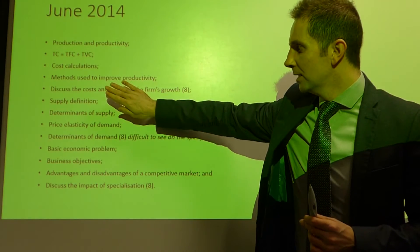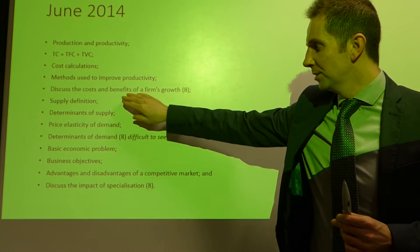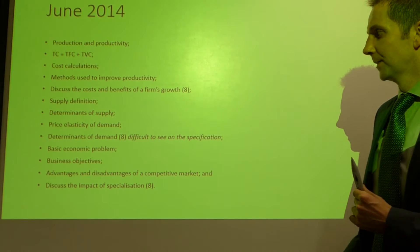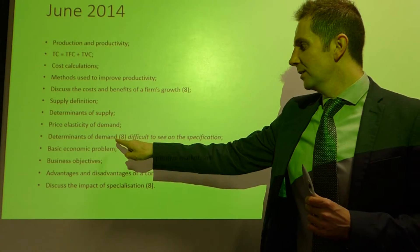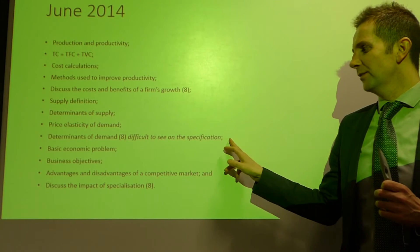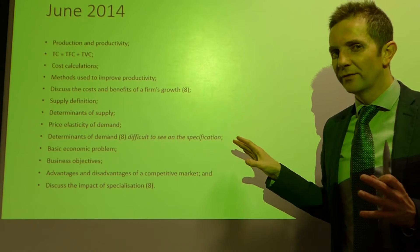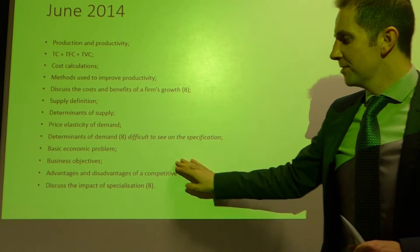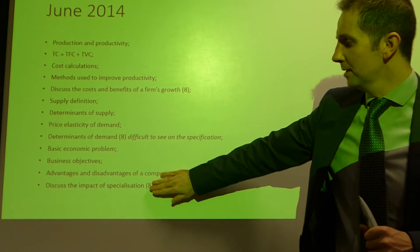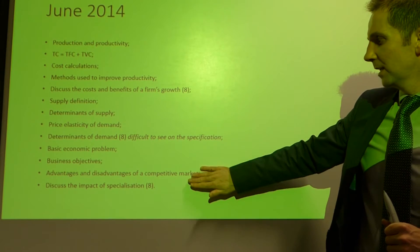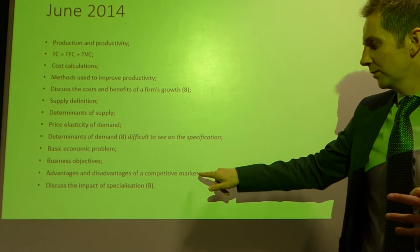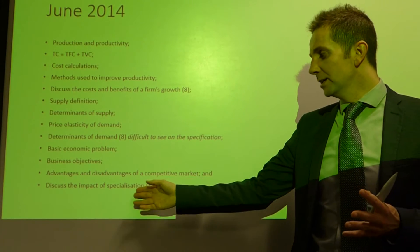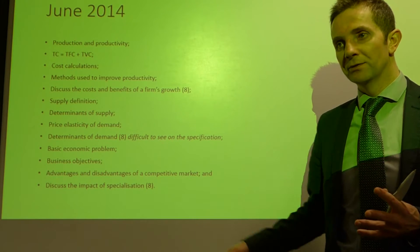Question two covered supply and demand: supply definition, determinants of supply, and then price elasticity of demand. The essay focused on the determinants of demand — it's a little difficult to see that on the specification at first glance, but we'll be able to point out where that comes in. The third question was all about the basic economic problem, business objectives, the advantages and disadvantages associated with operating in a competitive market, and again the issue of specialisation rears its head.